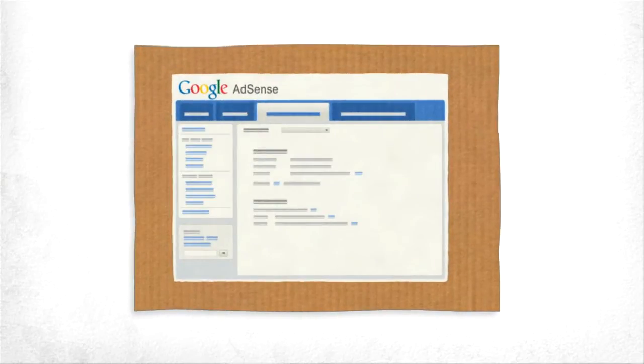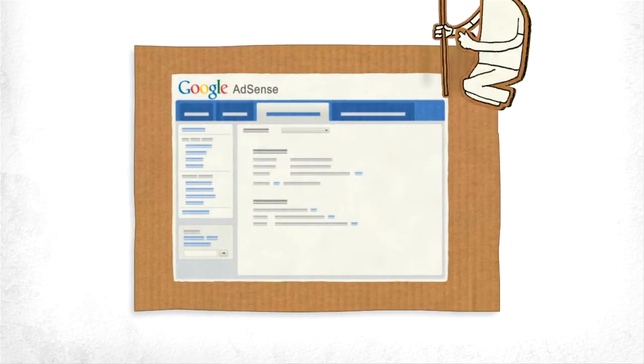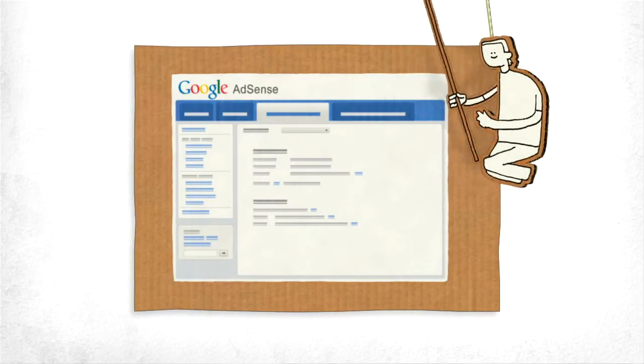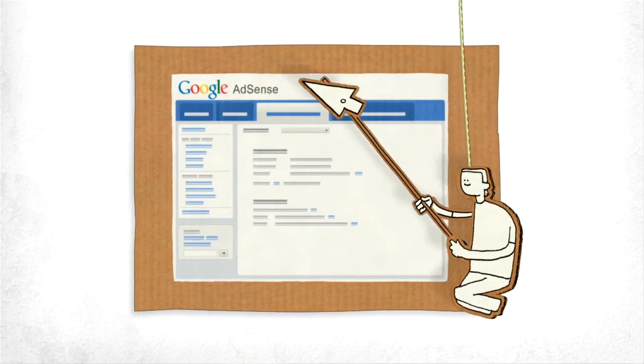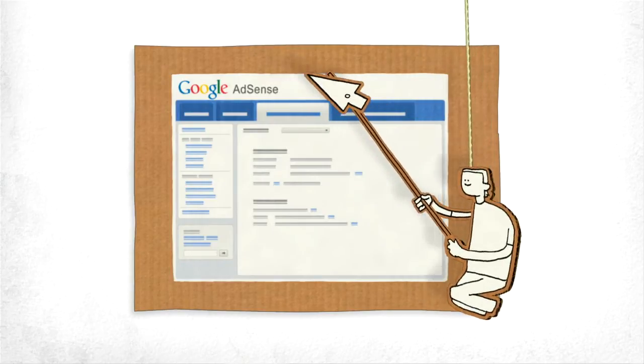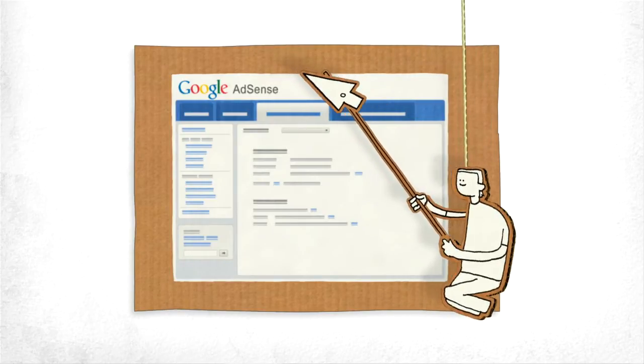To help you take advantage of AdSense features we think you'll find helpful, we've grouped related ones together. For instance, we put all the ad controls, including our revamped ad review center, in one place, under the Allow and Block Ads tab.